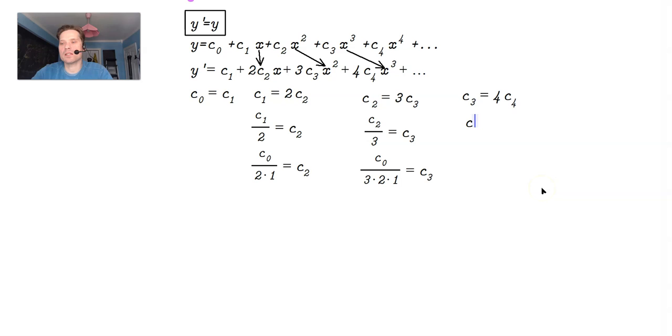That means then c sub 3 over 4 is equal to c sub 4. But c sub 3 is expressed already in terms of c sub 0. So that means I can write the following. c sub 0 divided by 4 times 3 times 2 times 1 is equal to c sub 4.